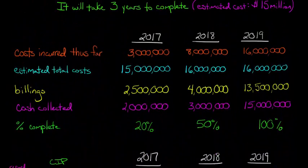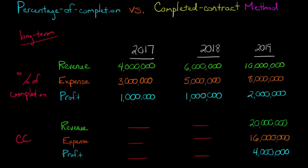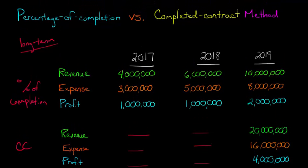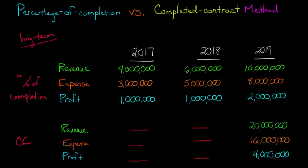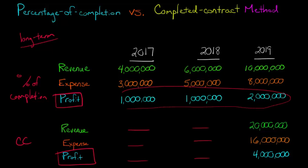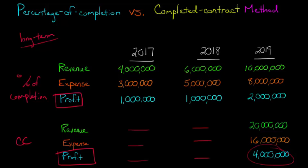Now we can come back and look at the effect on earnings — and I encourage you to watch those prior videos if you haven't. When thinking about the effect on earnings and profit, if we do percentage of completion, we're smoothing the earnings: a million here, a million here, two million here. But with completed contract, we're dumping it all at the end — $4 million. Firms currently have the option to use both methods, so it's important to understand that completed contract doesn't smooth profits as much. You might have one big year where a firm just finished a large bridge, and all of a sudden profits look huge.